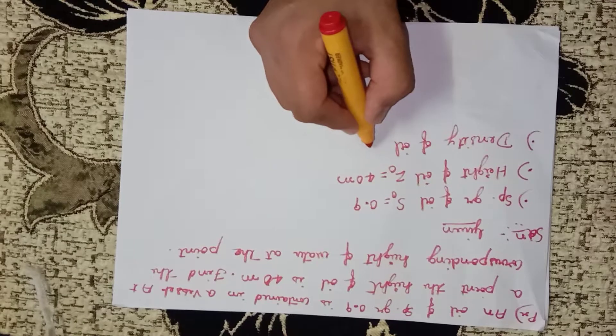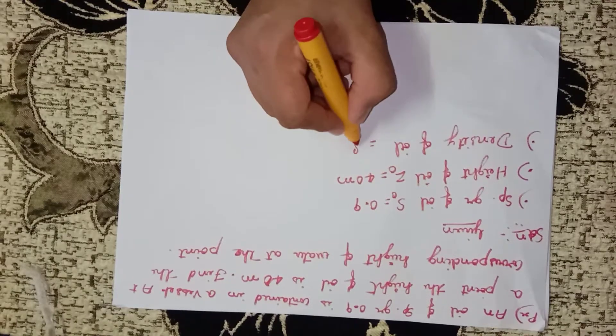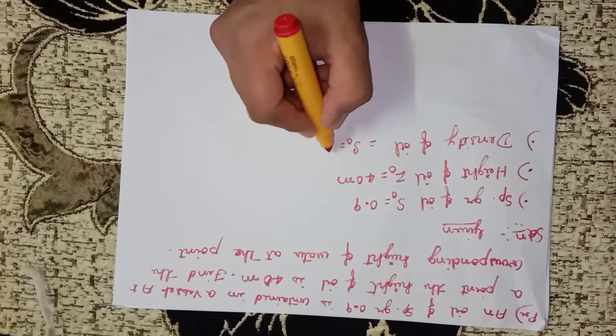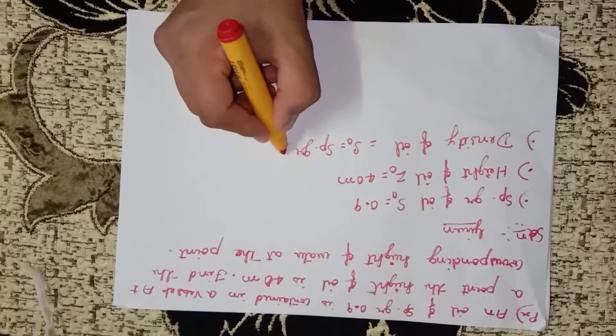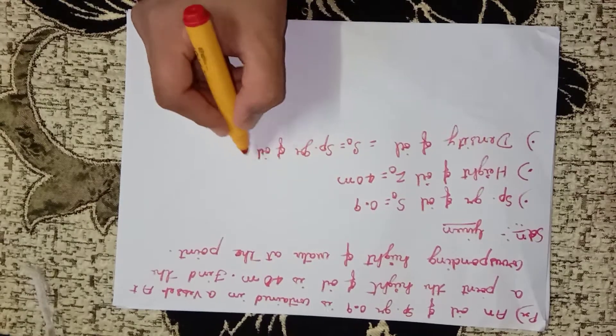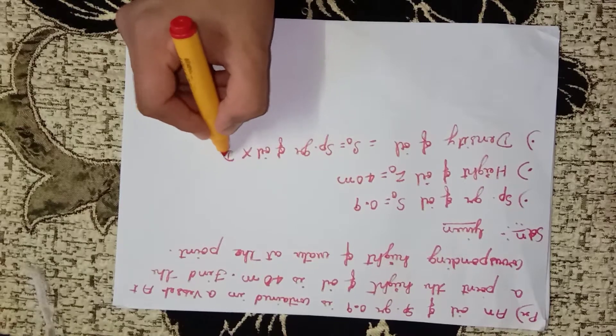Density of oil, that is equal to rho naught, is equal to specific gravity of oil into density of water.